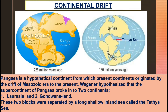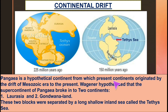Pangaea is a hypothetical continent from which the present continents originated by the drift during the Mesozoic era to the present. There was only one single continent called Pangaea at that time.